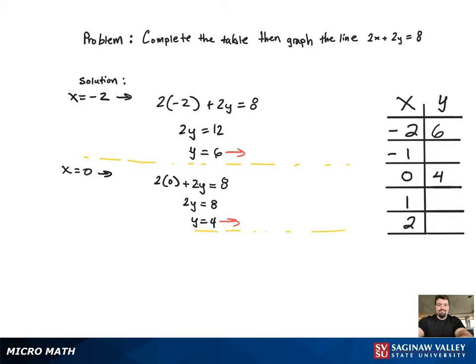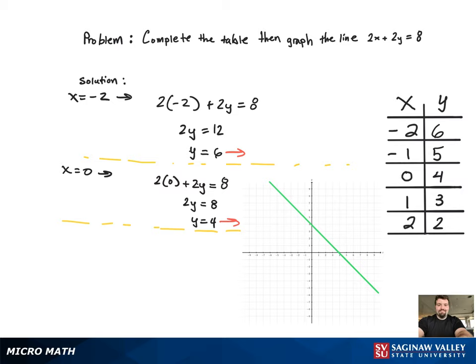Now I'm just going to fill in the table. You can do the work on your own. And there's the graph of the equation. As you can see, it'll pass through every point on that, every ordered pair in the table.